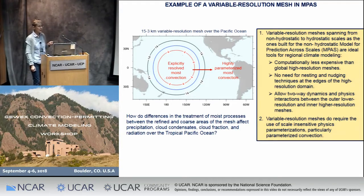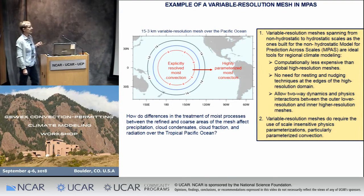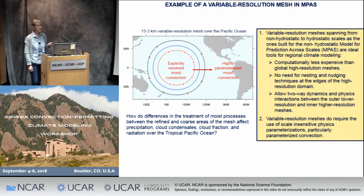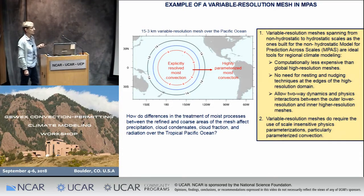How does the difference in the grid scale impact the treatment of most processes, and how does that affect precipitation, cloud condensate, cloud fractions, and radiation over the tropical ocean?